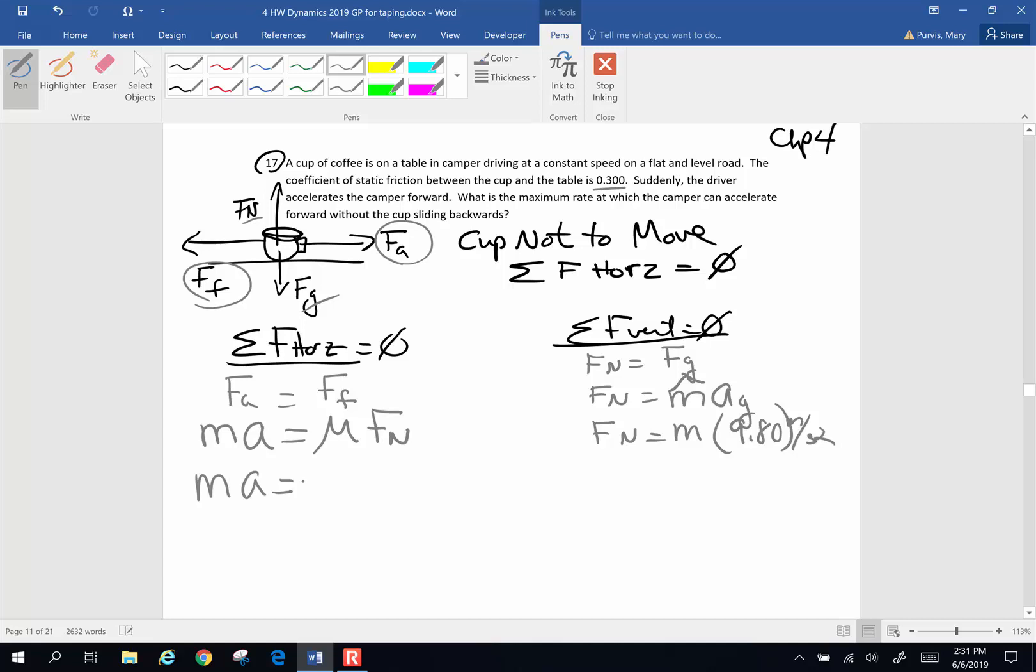So let's carry this through. Mu we know is 0.3, normal force we know is mass times 9.8 meters per second squared. These are both the mass of the cup. You've got the mass on both sides, so those are going to cancel. So what is the maximum rate that everything can accelerate? It's going to be 0.3 times 9.8.